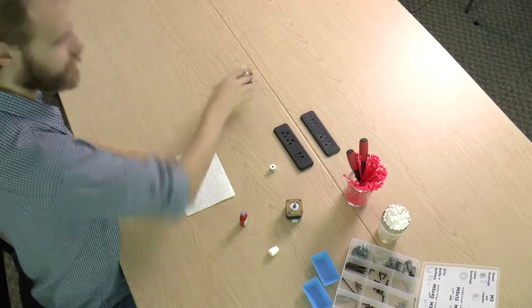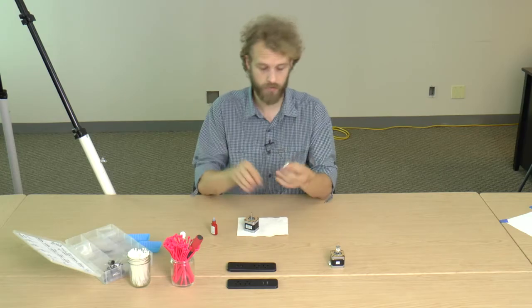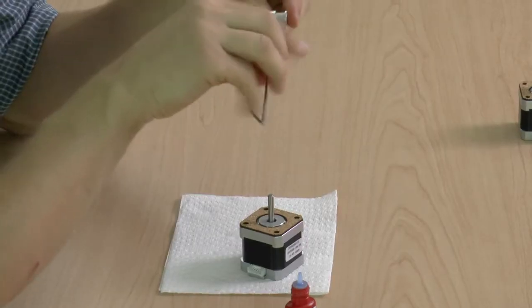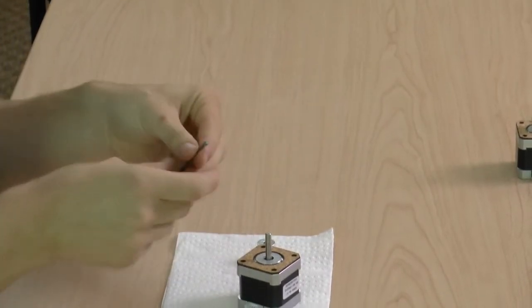That's the Y motor. On the X motor, we'll do the same thing with the threads on the set screws. Just put out a little bit of the thread lock.